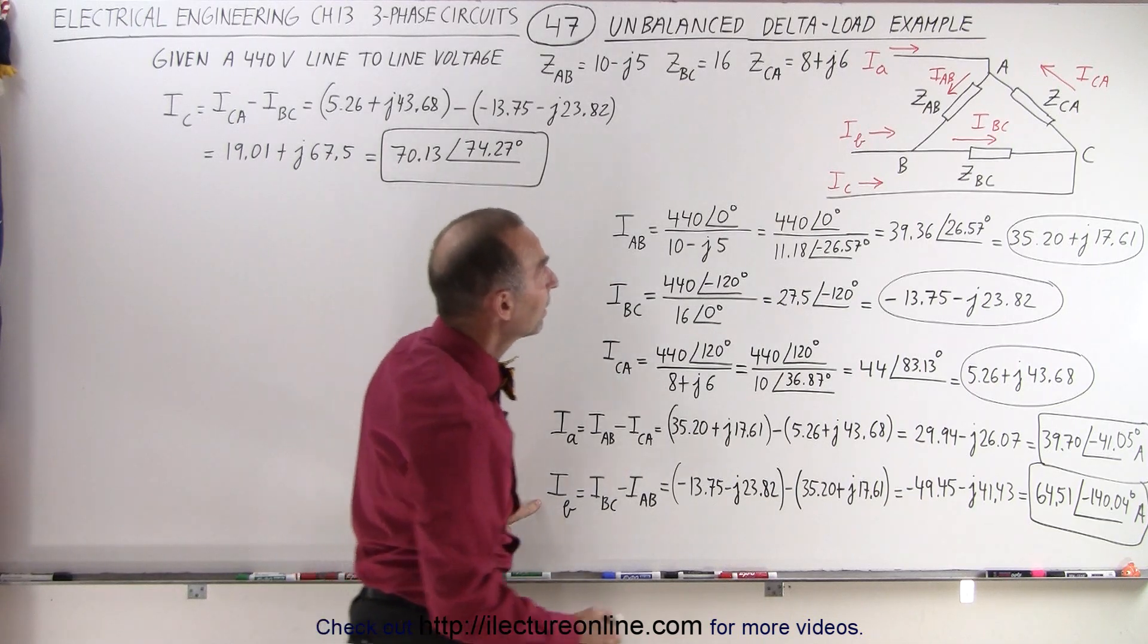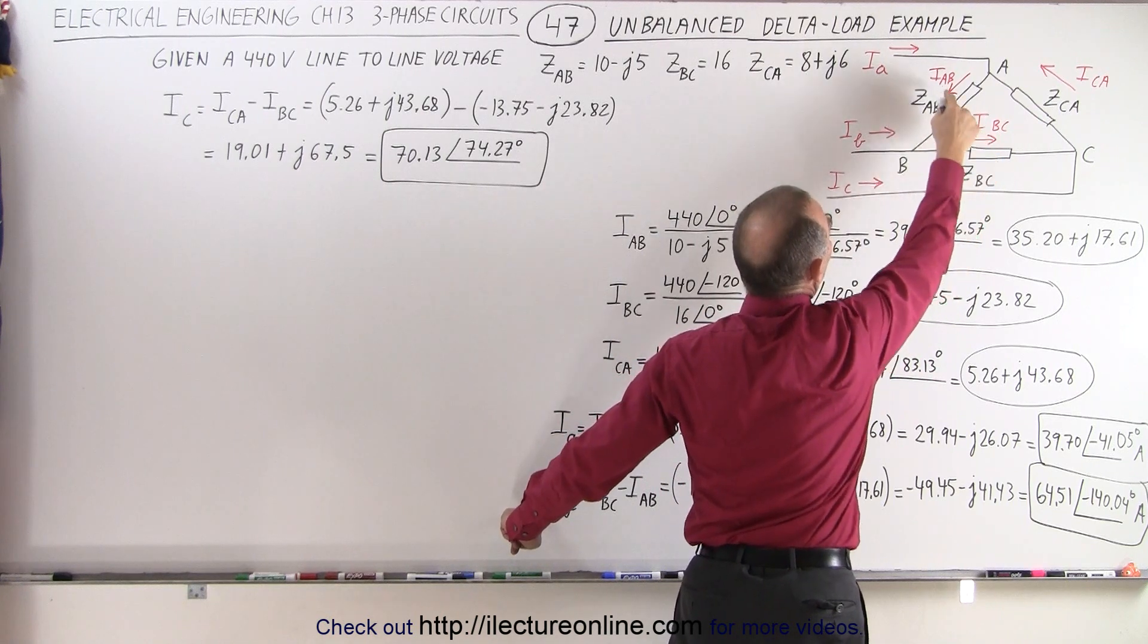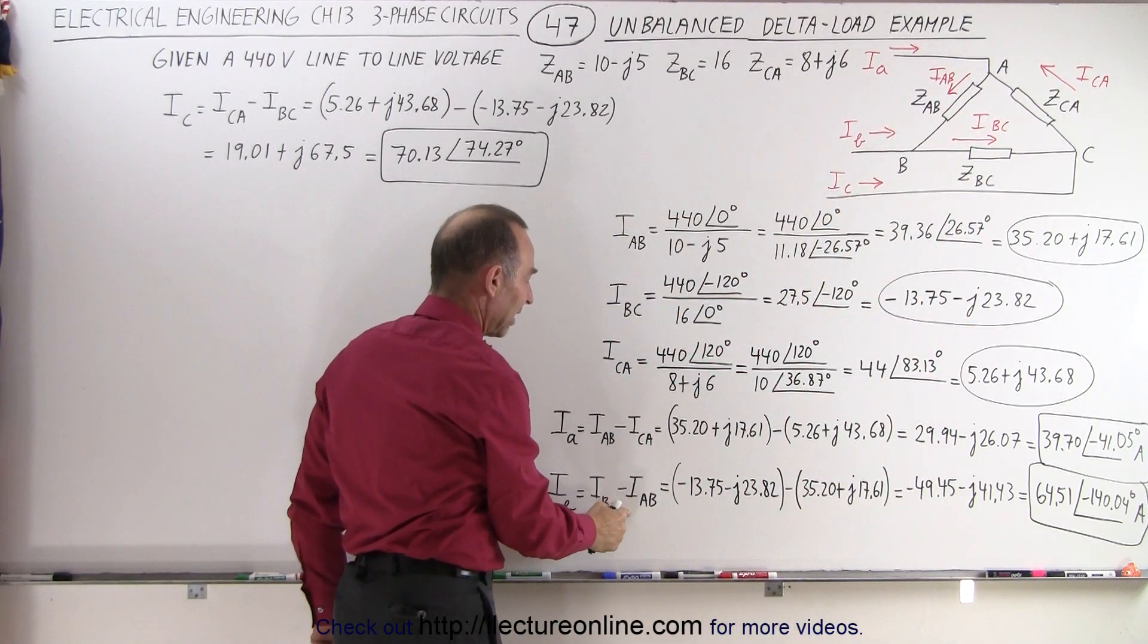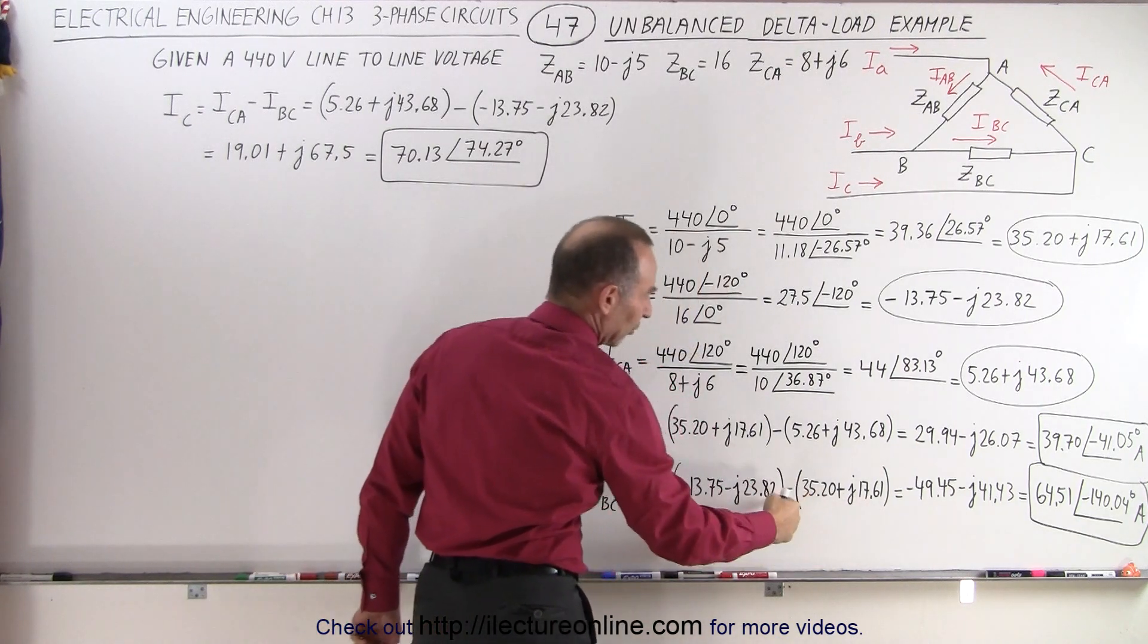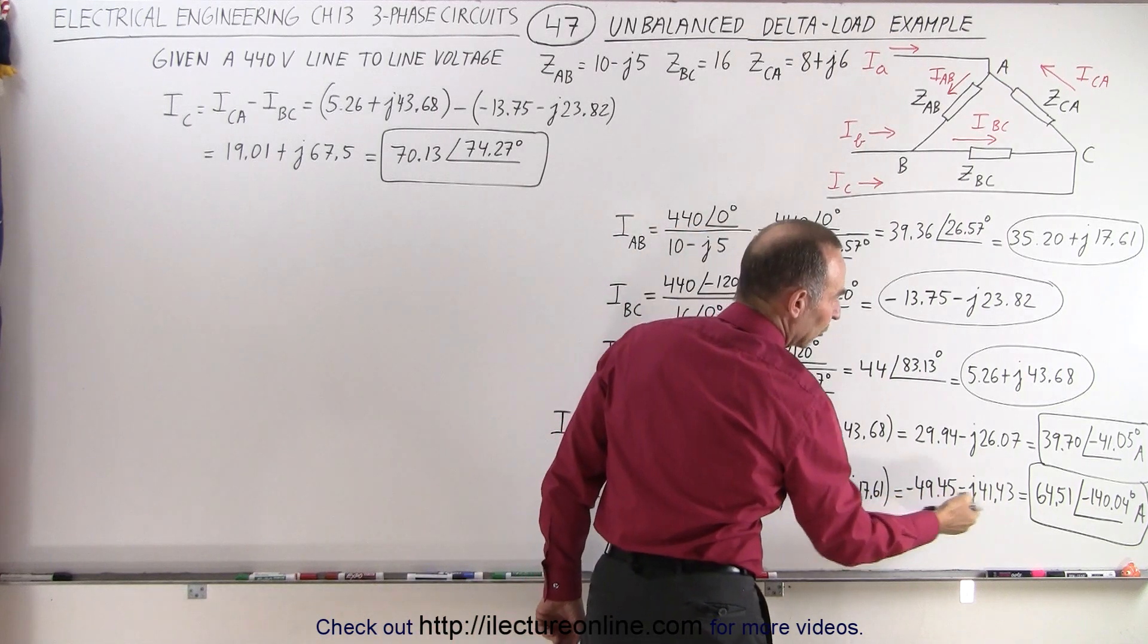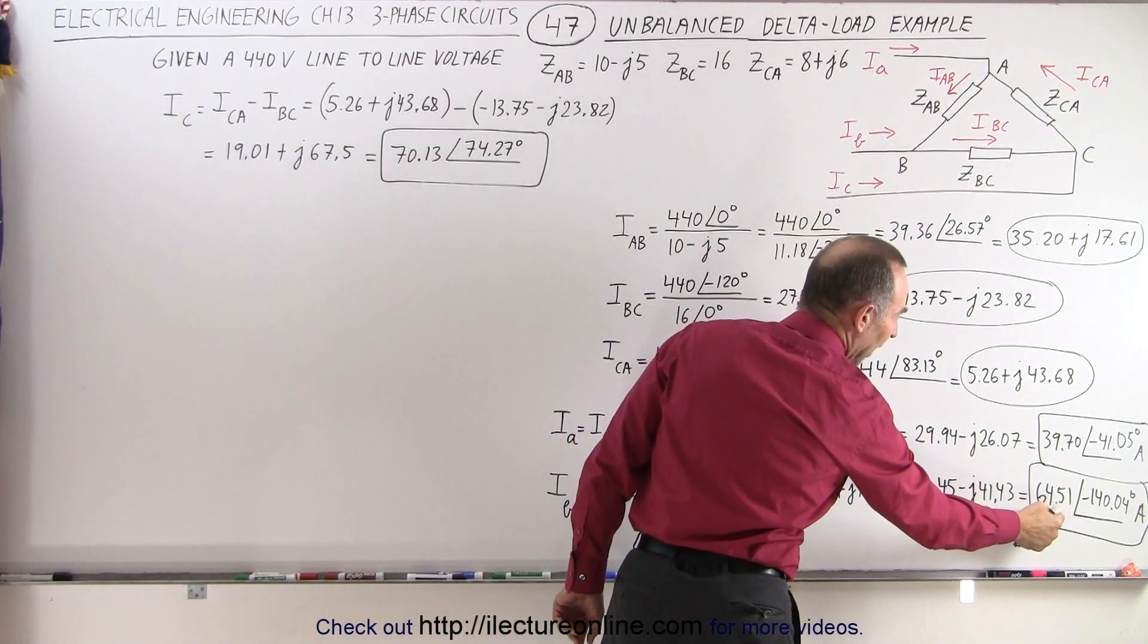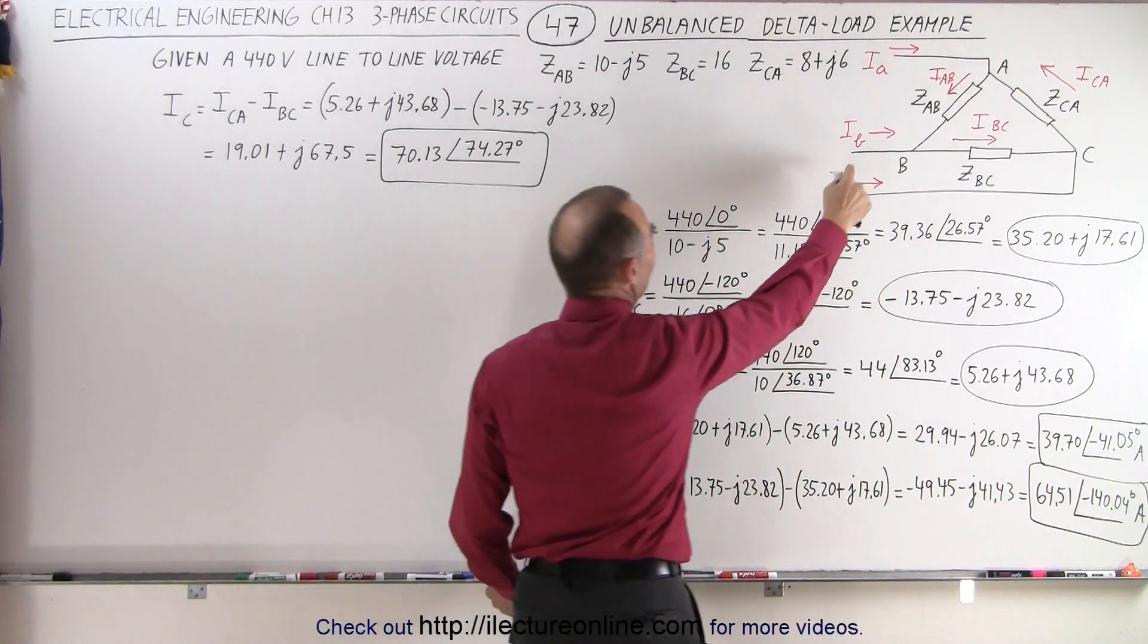For current Ib, notice it'll be equal to Ibc minus Iab. Ibc is this current right here. Iab is this current right here. So subtract the two from one another, get the magnitude, we get the real and imaginary parts converted to magnitude and phase angle format, and that would then be the line current Ib.